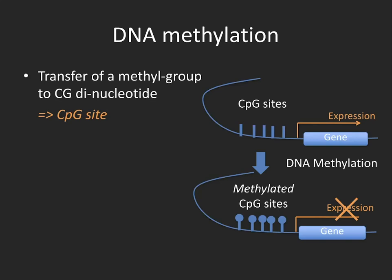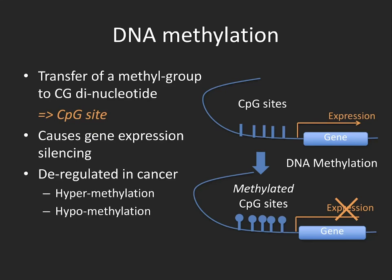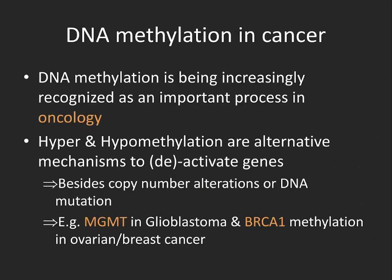First, I want to talk about our work linking methylation or epigenomic data with histopathology images. DNA methylation is an important process in cancer and oncology. It is essentially the transfer of a methyl group to a CG dinucleotide, which can cause gene expression silencing. This process is often deregulated in cancer, causing hypermethylation and hypomethylation. Hypermethylation can deactivate tumor suppressor genes, while hypomethylation can activate oncogenes, similarly to other genetic alterations such as copy number changes and DNA mutations.